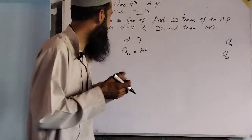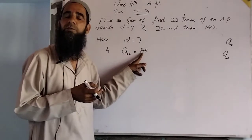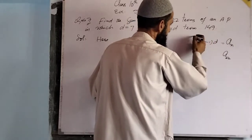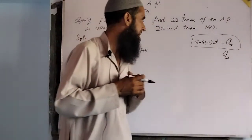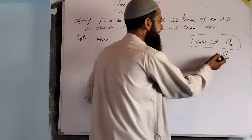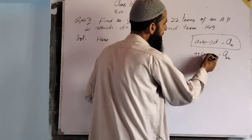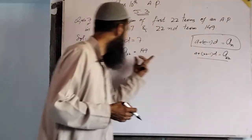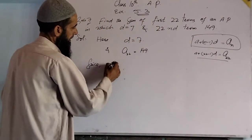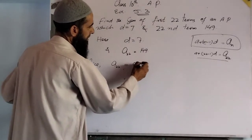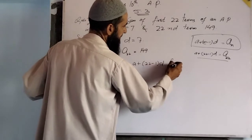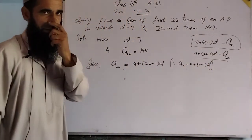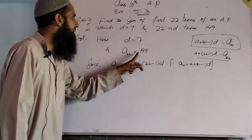We have a₂₂ is equal to 149. Using the general term formula, aₙ is equal to a plus (n minus 1) into d. For the 22nd term, a₂₂ equals a plus (22 minus 1) into d.